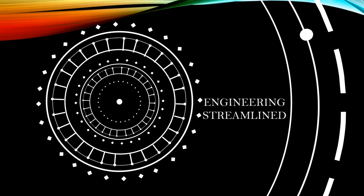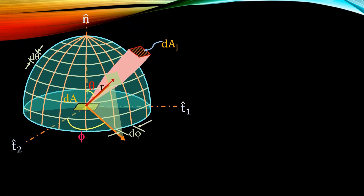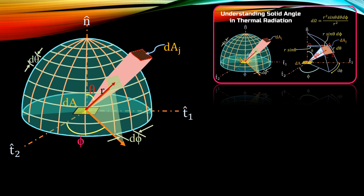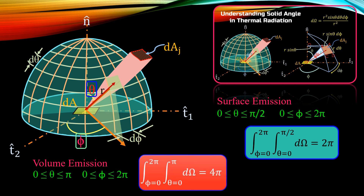Hello friends, welcome to Engineering Streamlined. In one of my previous videos on solid angle, I had shown that the theta angle for surface radiation emission varies from 0 to π/2 and phi angle varies from 0 to 2π, which results in solid angle equal to 2π. For volume radiation emission, theta varies from 0 to π and phi varies from 0 to 2π, which results in solid angle equal to 4π.